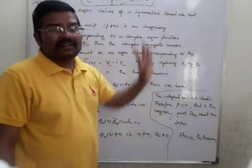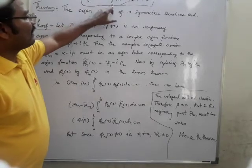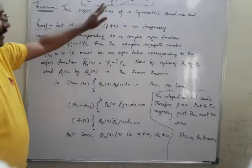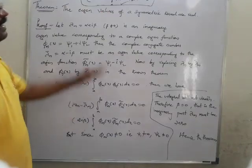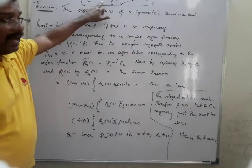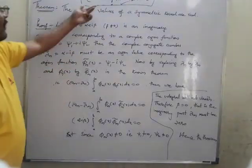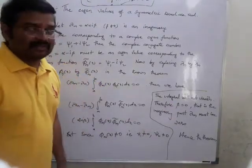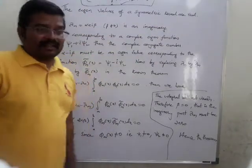So we have proved that eigenvalues of a symmetric kernel are real. To summarize: from the previous theorem, lambda m minus lambda n, integral a to b of phi m of x and phi n of x equal to 0 — the orthogonality result. Using that result, by replacing lambda n as lambda m bar and phi n by phi m bar, and simplifying, we get that beta — the imaginary part — is nothing but equal to 0, showing that the eigenvalues of a symmetric kernel are real.